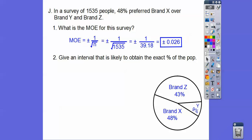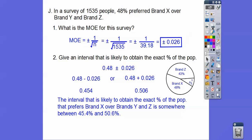Give an interval that is likely to obtain the exact percentage of the population. What we're going to do is take our sample population, 0.48, and we're going to add and subtract this 0.026. We just go ahead and add or subtract, and that's going to give us 0.454 or 0.506. That means that the interval is likely to obtain the exact percent of the population that prefers brand X over brands Y and Z is somewhere between the 45.4% and 50.6%. So that means our sample, this interval, is going to obtain our true population.